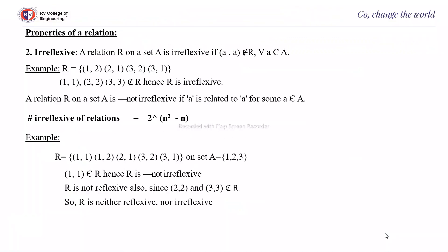The second property is irreflexive. A relation R on set A is irreflexive if (a,a) ∉ R for all a ∈ A. It means for no element of A will you have a pair (a,a); the diagonal elements of the matrix representation of R will all have value 0. Example: R = {(1,2),(2,1),(3,2),(3,1)}. Here (1,1),(2,2),(3,3) do not belong to R, so R is irreflexive.